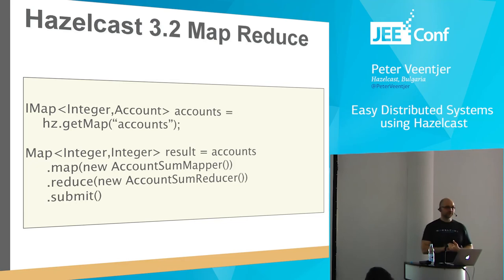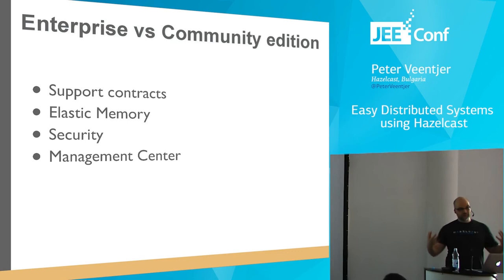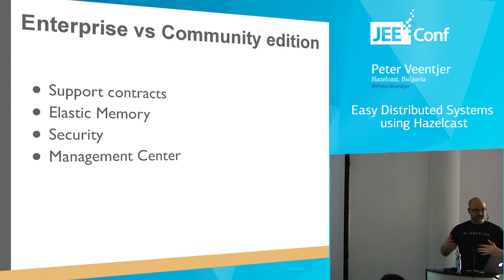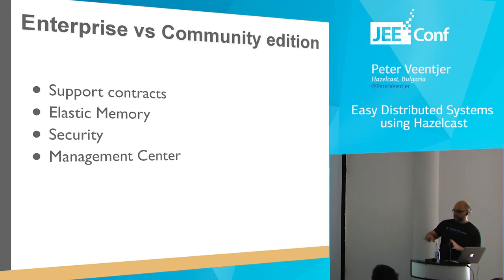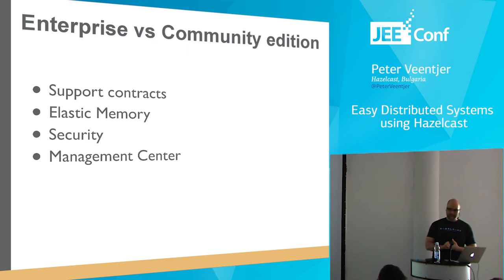Enterprise features. We have support contracts where, depending on your contract level, you get support within a certain timeframe. We have elastic memory — if you have more than 10-15 gigabytes of heap, the garbage collector becomes annoying because it needs to iterate over all memory, so we have an off-heap storage solution that is still in memory but not visible to the JVM, so the garbage collector is not affected. We have a fine-grained security solution and the Management Center, where you can see what's going on inside a cluster — very convenient for DevOps.